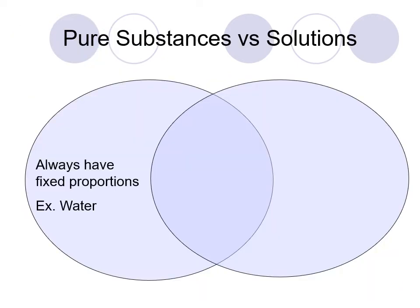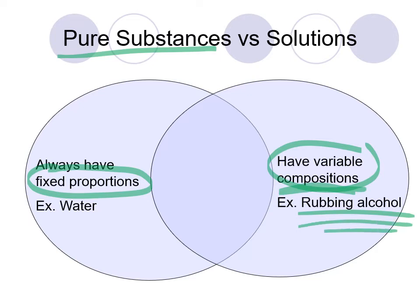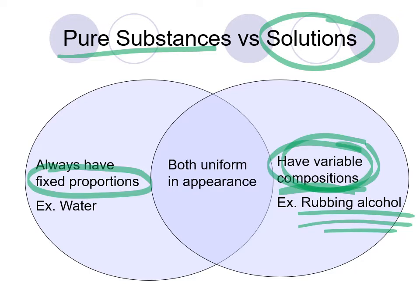A quick comparison: pure substances always have fixed proportions — you can write down their chemical formula. Solutions, however, have various compositions. When you buy rubbing alcohol you might get it at 30%, 70%, or 100%, because the composition varies. You don't have a chemical formula for a solution overall, only for its parts. What they have in common is they both look homogeneous — you cannot see the parts inside them.